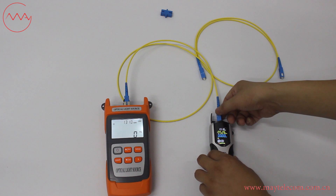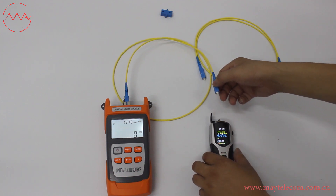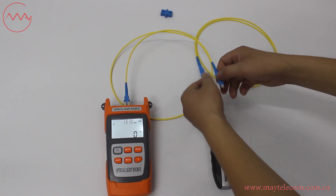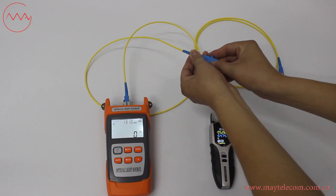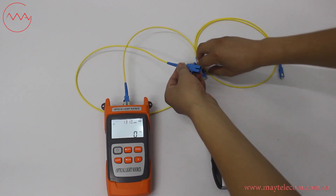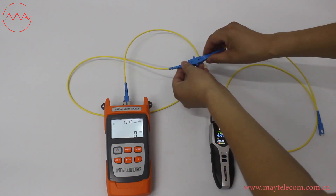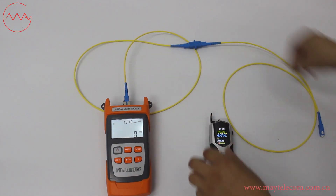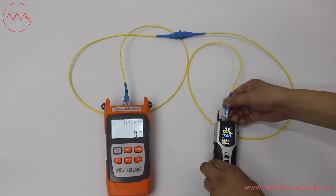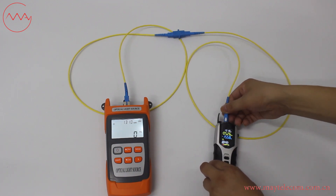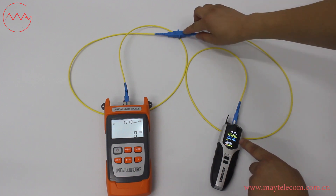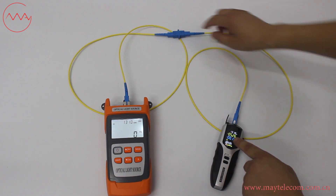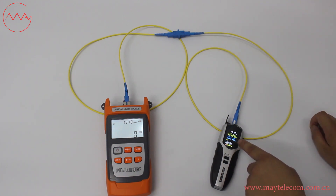Take off the SC connector from the optical power meter and connect it with the patch code on test. The insertion loss of this connector is 0.1 dB.